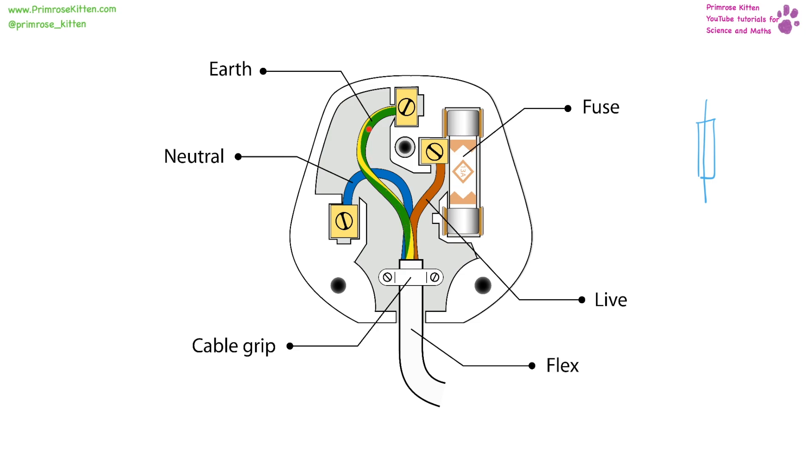We have the live wire, the earth wire, which is another safety feature of the plug. The neutral wire, the pins holding them down. The cable grip, another safety feature, making sure that the wire doesn't go anywhere. The cable, which is doubly encased in plastic, this is encased in plastic, then this is encased in plastic. Again, another safety feature of the plug. And the plastic casing, another safety feature of the plug.